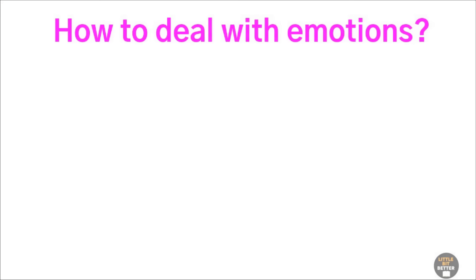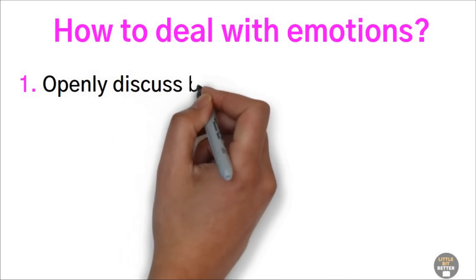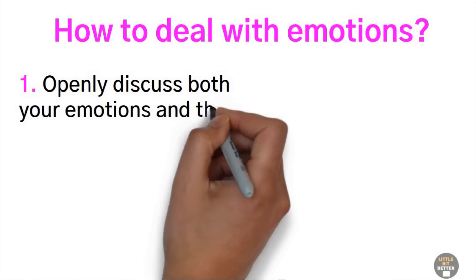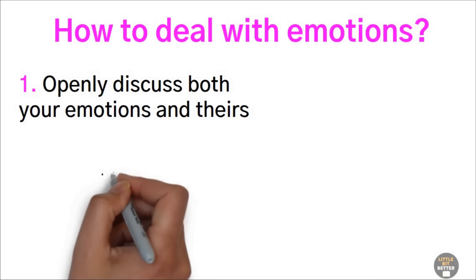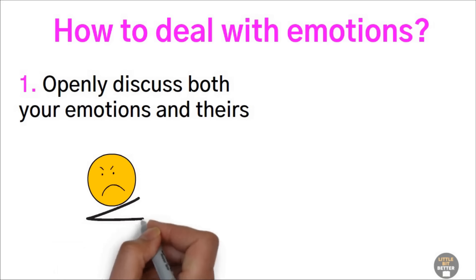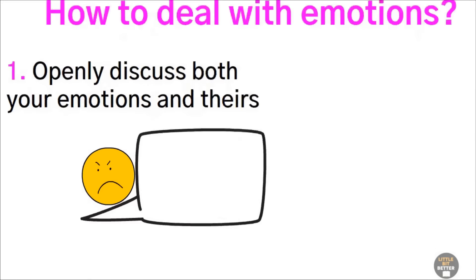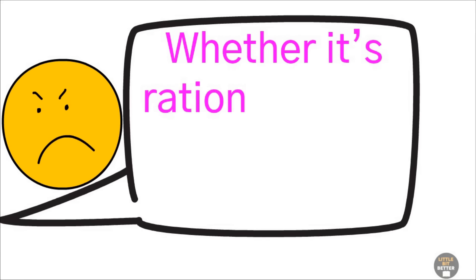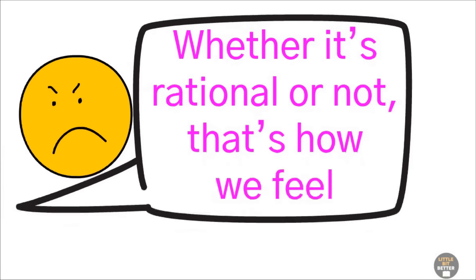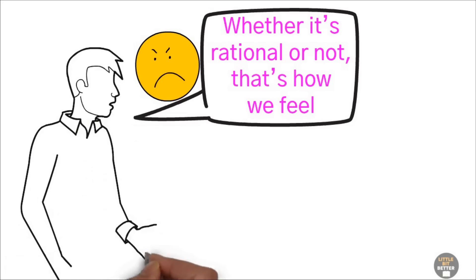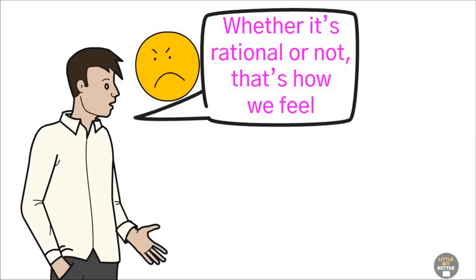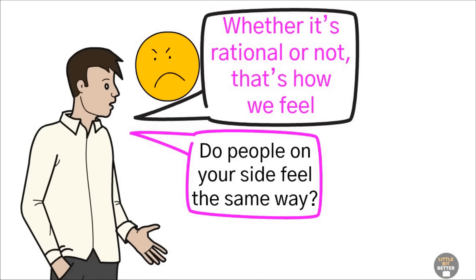One, openly discuss both your emotions and theirs. You can say, Our side feels mistreated and very upset. We're afraid an agreement won't be kept even if we reach one. Whether it's rational or not, that's how we feel. I think our fear might be misplaced, but that's how we feel right now. Do people on your side feel the same way?